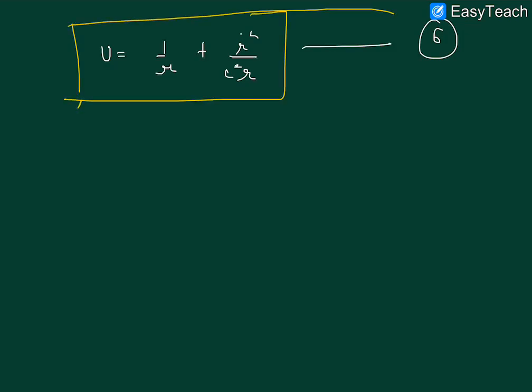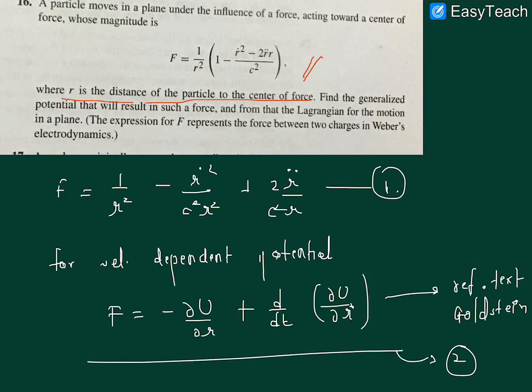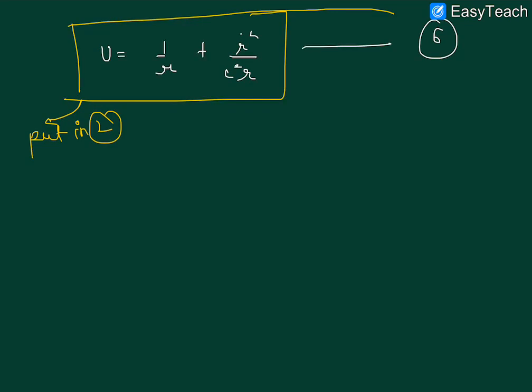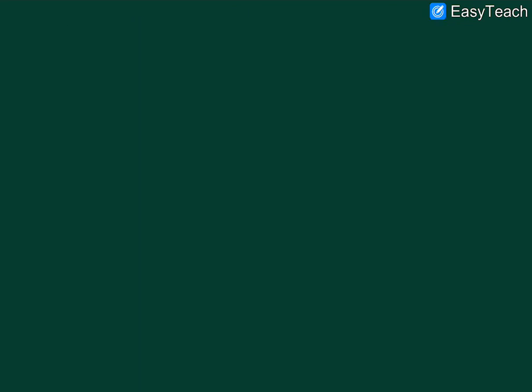So if I put this equation into equation 2, if I put all of whatever there is in term U over here, I will get nothing but this F that's lying over here. Now we'll move on to find the Lagrangian for the same. The Lagrangian L will be T minus U.